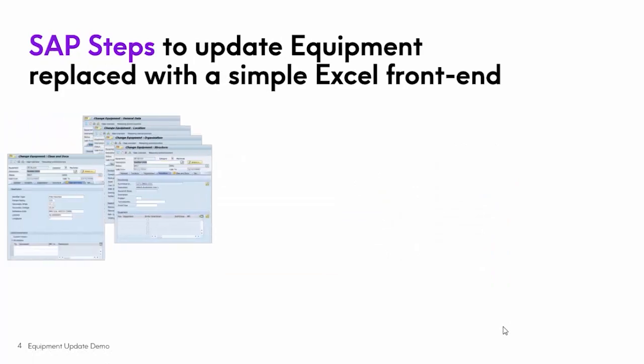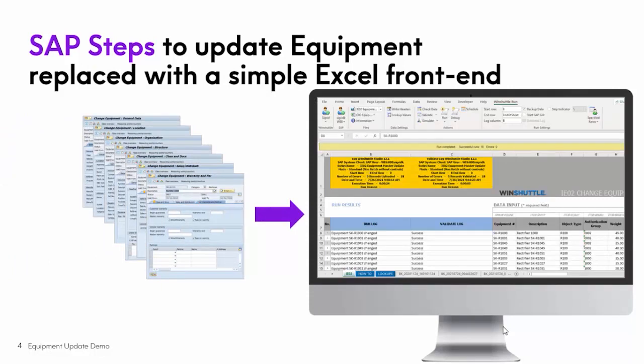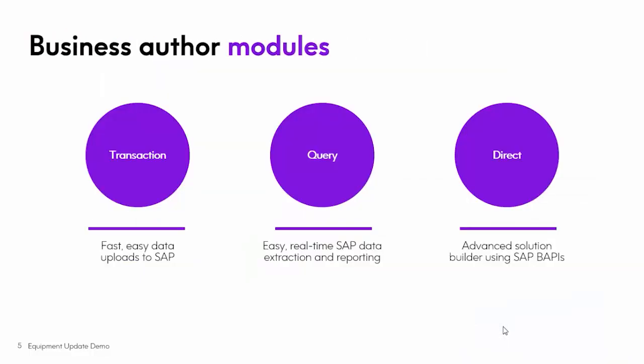The steps to update equipment, as with most things in SAP, require you to visit lots of screens. Our customers find it's much simpler to interact with SAP from a business-friendly tool like Excel to create or, in this case, update various objects — and we're doing equipment today. There are three different author modules: Transaction, to automate those SAP transactions you'd otherwise manually walk through; Query, to extract data out of the backend system for operational reporting or to extract prior to updating; and Direct, which allows you to interact with SAP through SAP BAPIs — business APIs. They're essentially SAP programs, and SAP has tons of them — a very efficient way to interact with SAP. Today, we're going to cover Transaction for the most part, but our example will also include a Query to extract data prior to updating.